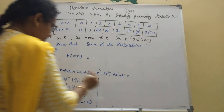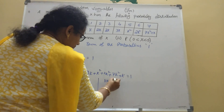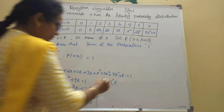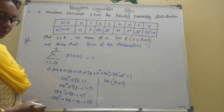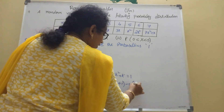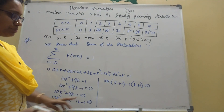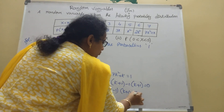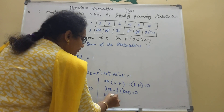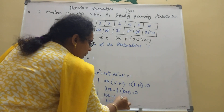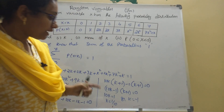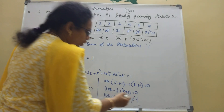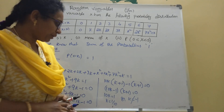Taking 10k common from the first two terms gives 10k(k plus 1), and taking minus 1 common from the last two gives minus 1(k plus 1). So (10k minus 1)(k plus 1) equals zero. Either 10k equals 1, giving k equals 1/10, or k equals minus 1. Since probability must be between 0 and 1, k equals minus 1 does not exist. So k equals 1/10.